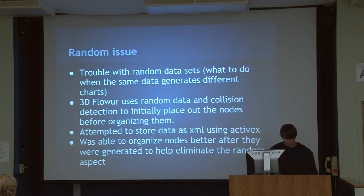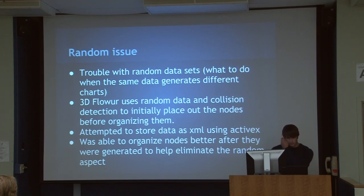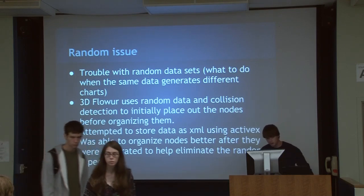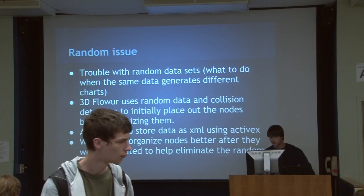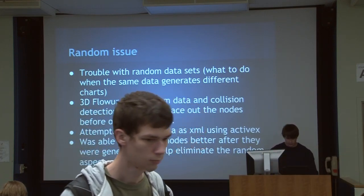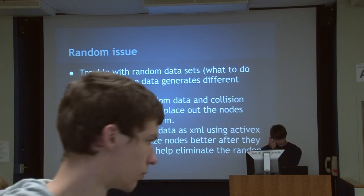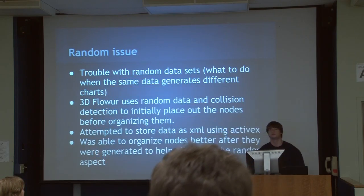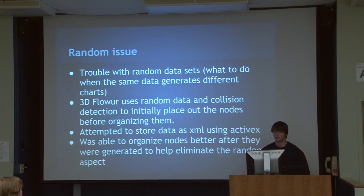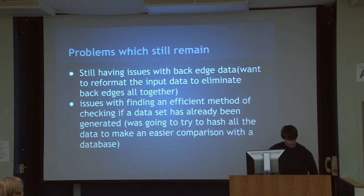The first problem is the random issue. When you start with random coordinates, I had a collision detection system that stored all the coordinates and radius of each node, then checked an array to see if a position was taken and would move the node to the right if so. After laying them out, I needed a way to permanently store all the data. I played around with XML and ActiveX, and that was kind of a nightmare, so I'm still working on that.